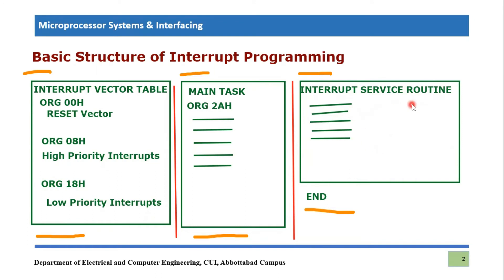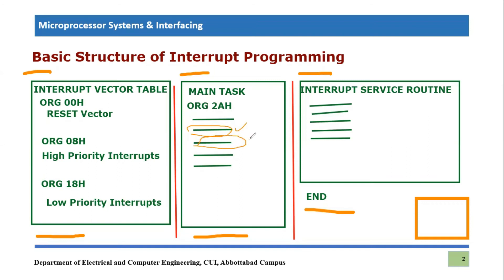In interrupt programming, the microcontroller is performing its main task and suddenly one interrupt appears and disturbs its normal routine. What happens is the microcontroller will finish its current instruction execution and save the address of the next instruction into the stack. We have already covered stack programming in microcontrollers. The address of the next instruction — let's say its address is 0x02 — is going to be stored in the stack.